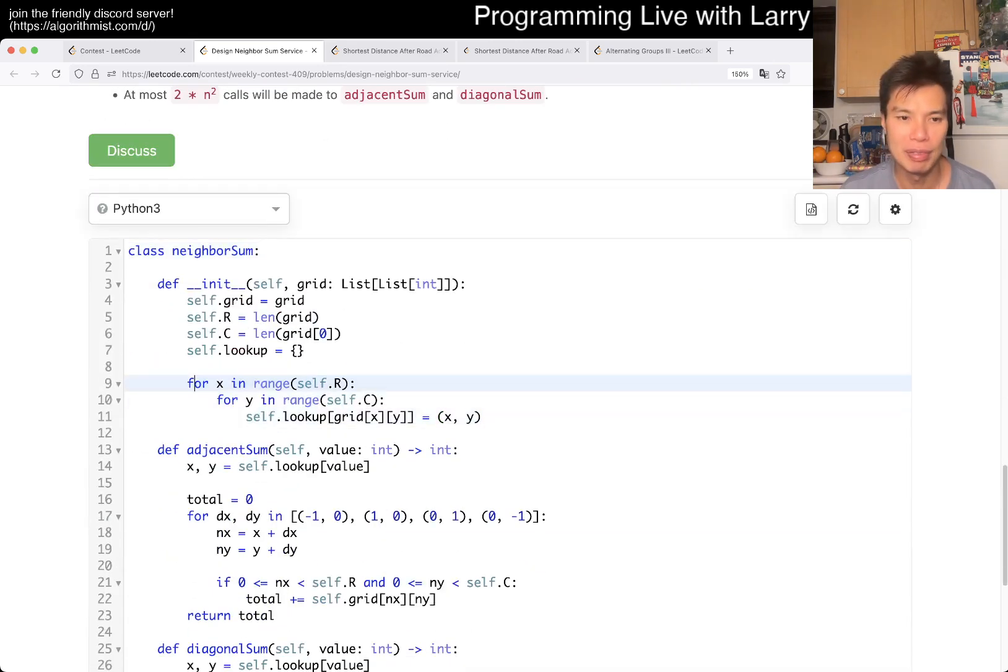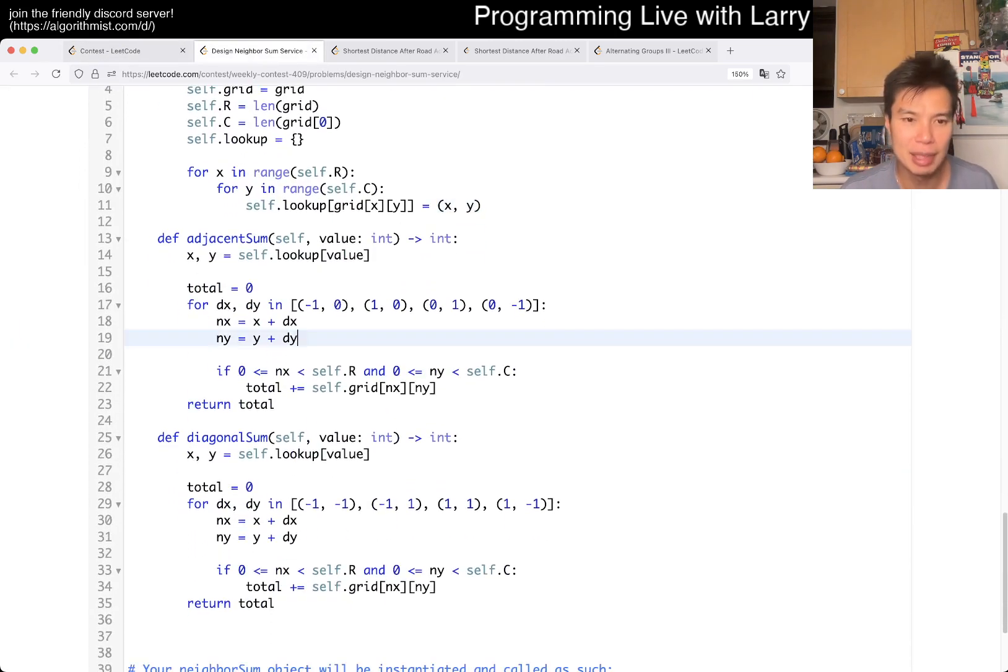This is how I set up. I set up a lookup, so that for every value, we contain the x and the y of the location. I did end up sum in about 3 minutes. But yeah, and then the adjacent sum and the diagonal sum are the same. You can probably even abstract this out and just kind of change this thing.